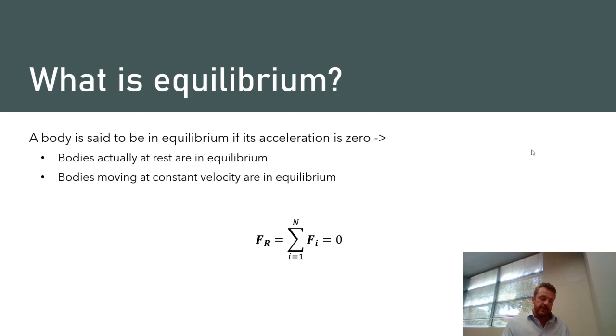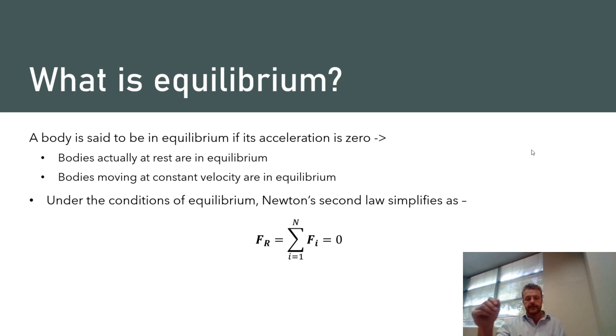However, if I have a body that is moving under constant velocity, since the derivative of a constant is zero, equilibrium also applies in that scenario as well. So just to refresh what the governing formula is, remember that Newton's second law relates the resultant force acting on a body to its acceleration. Specifically, that resultant force is going to be proportional to the acceleration, where the proportionality constant is the mass. So if acceleration is zero,